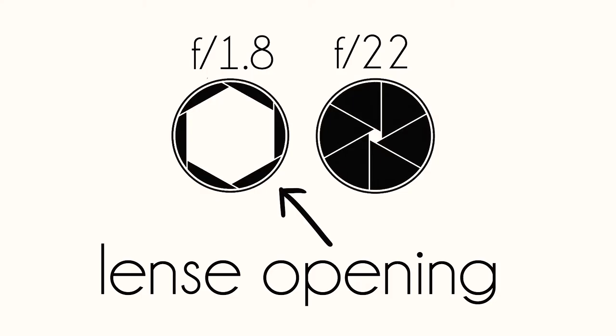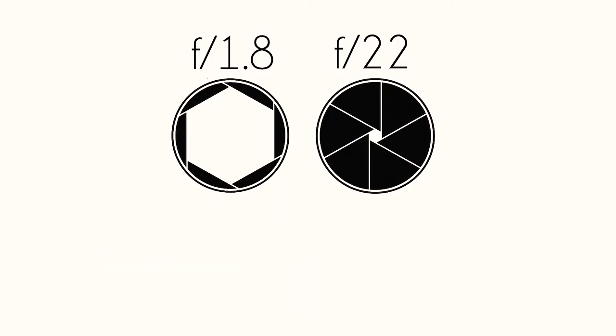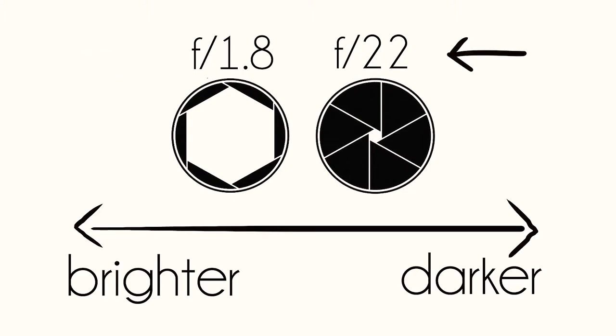There are three settings in your camera that affect the exposure: the aperture, the shutter speed, and the ISO. First we have the aperture, which is often represented as the f-stop. The aperture is the opening of the lens. An aperture at f1.8 will let in more light than an aperture at f11 or f22, because the bigger the number is, the smaller the hole will be, and the smaller the hole the less light comes through.